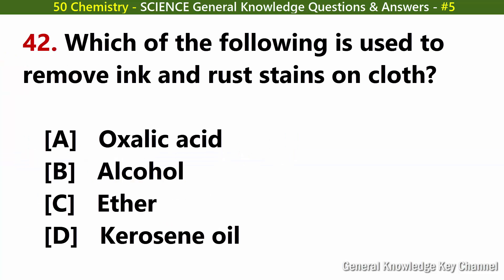Which of the following is used to remove ink and rust stains on cloth? Answer A: Oxalic acid.